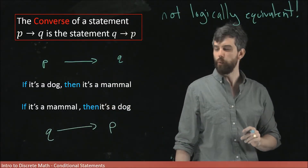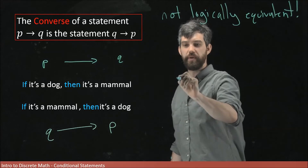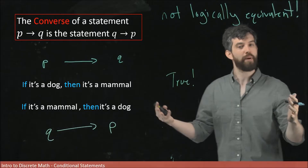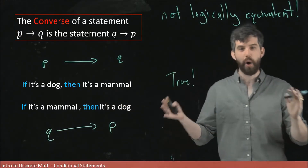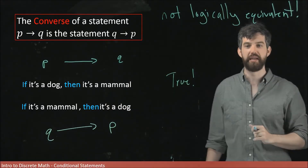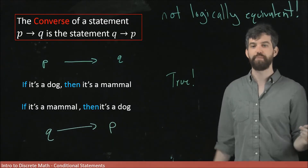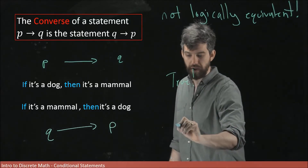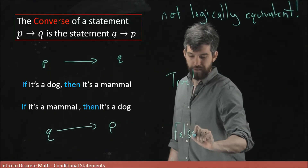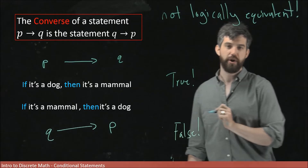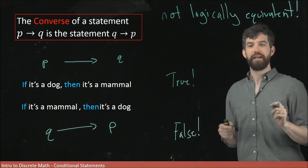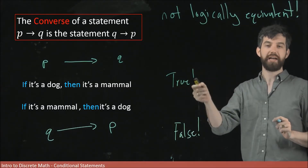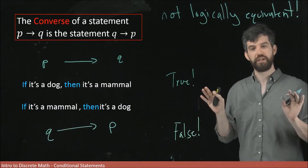The first statement — if it's a dog, then it's a mammal — is true, since being a mammal is a property of dogs; a dog is a special case of being a mammal. But the converse — if it's a mammal, then it's a dog — is false, because there are all kinds of mammals that are not dogs. So the big lesson is that P implies Q and its converse Q implies P are not logically equivalent.